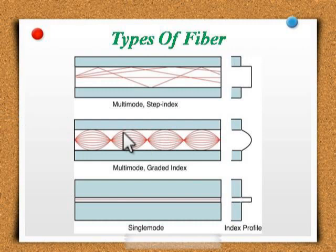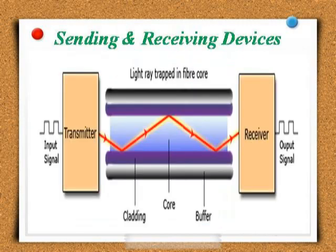Multi-mode fibers are used mostly in local area networks. The second type is single mode. It is used for a single source of light operation. It has separate distinct refractive indexes for the cladding and core. The light ray passes through the core with relatively few reflections off the cladding. It requires a laser, and the core is very small.